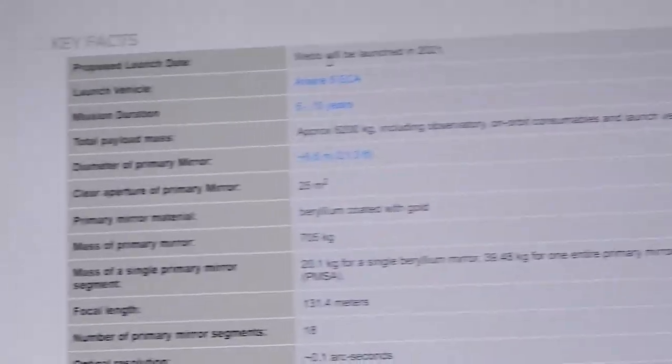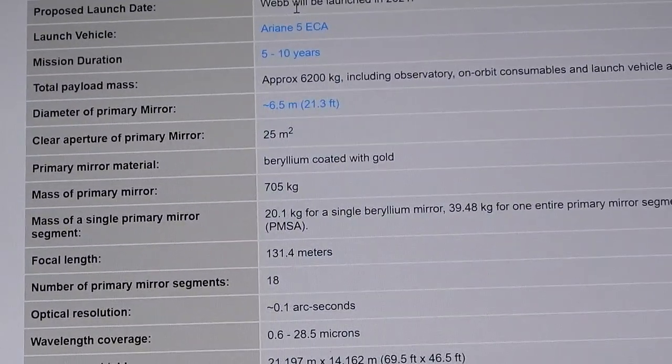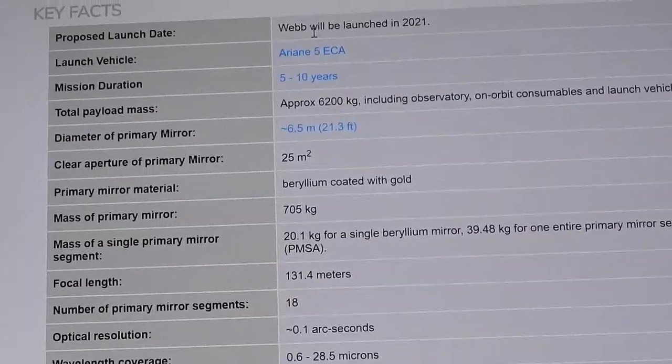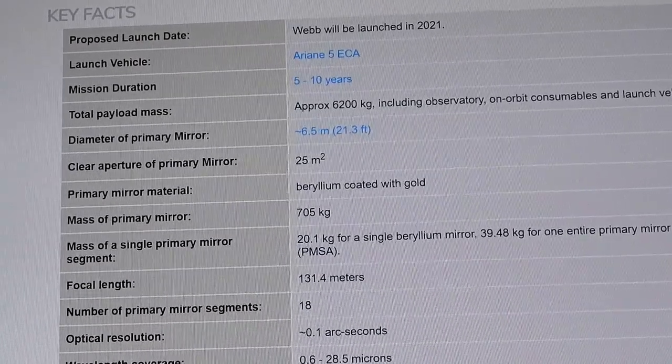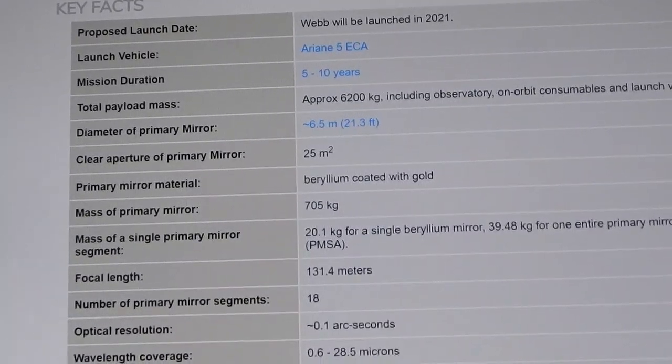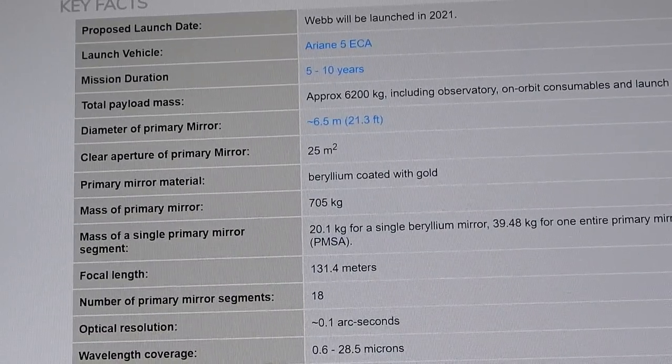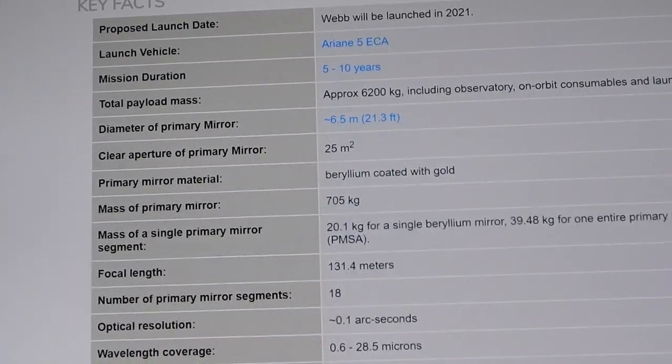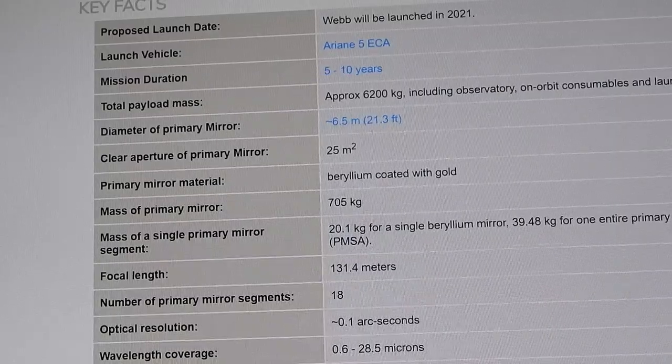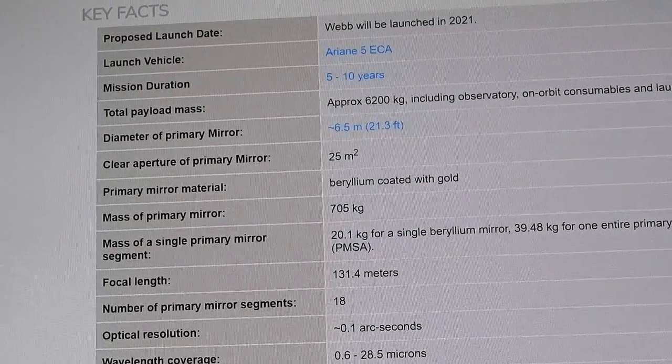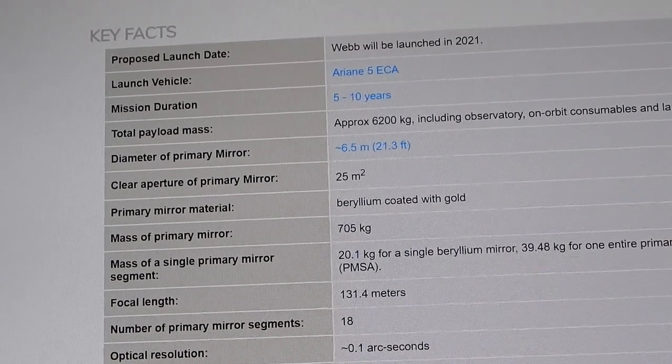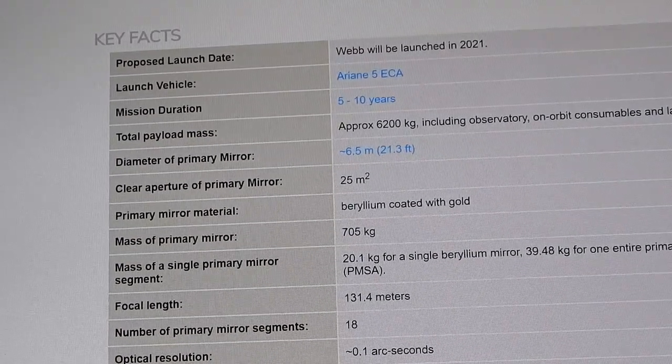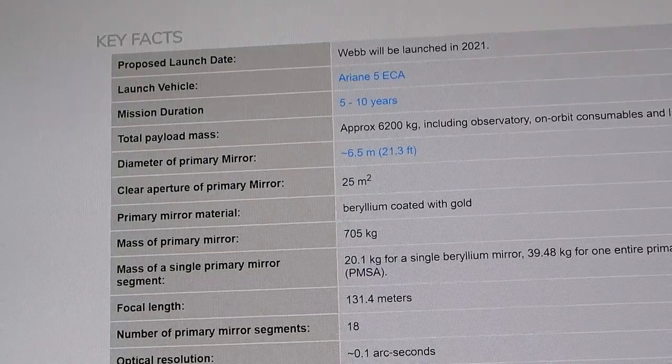All right, let's look at some specs here. This is going to be launched in 2021 on top of an Ariane 5. That's the European Space Agency's heavy lifter out of French Guiana. Very good track record it's had. The mission duration's gonna be five to ten years. Most of the time that's determined upon station keeping, the amount of fuel you have. And depending on the mission, you need to use fuel to keep this thing in the right spot.